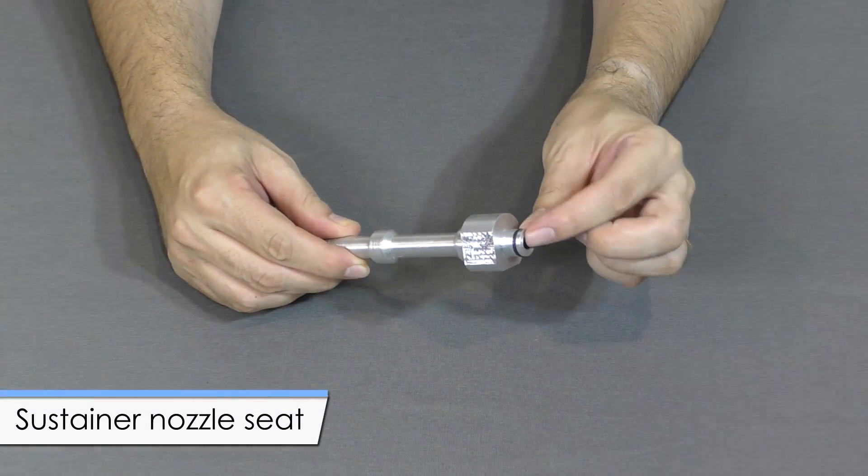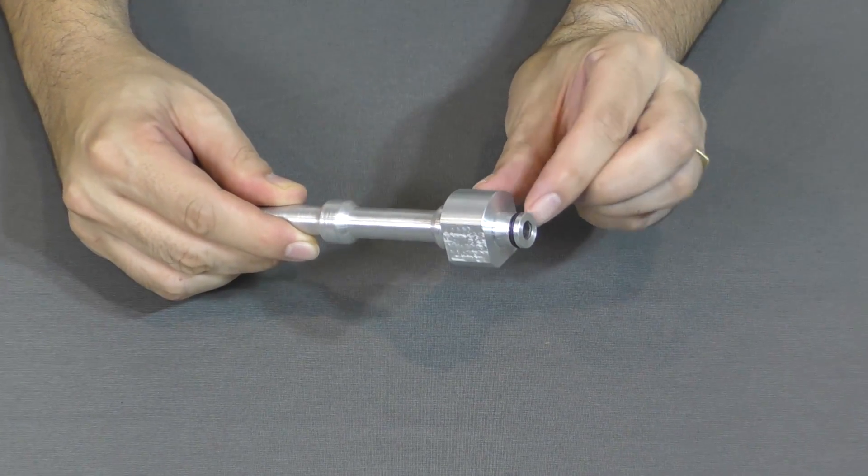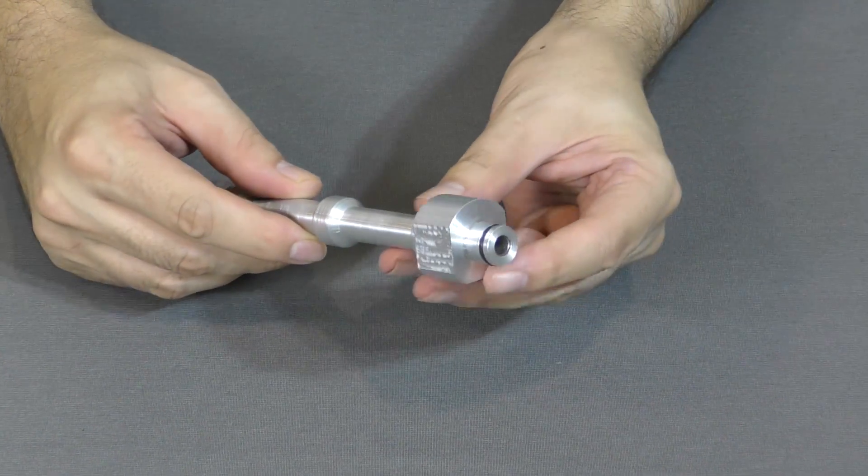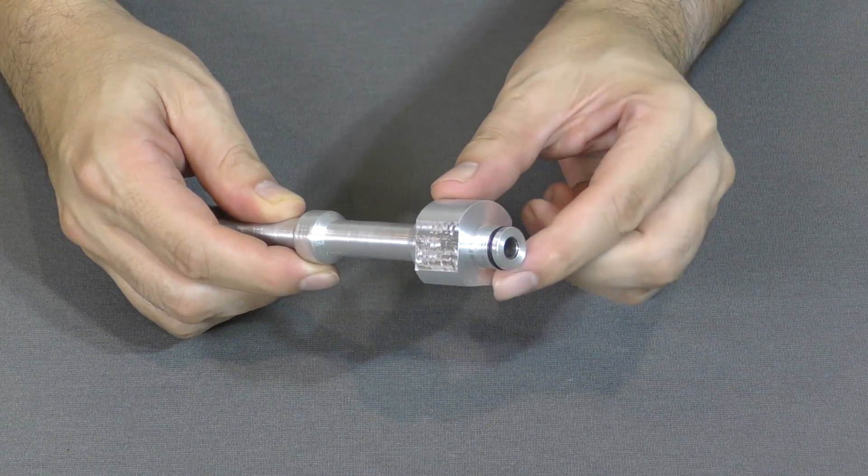At the top of the body is the sustainer nozzle seat. This has an o-ring that seals against the inside of the sustainer nozzle. This surface provides all the support for the sustainer during acceleration.